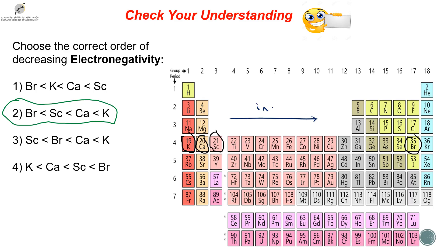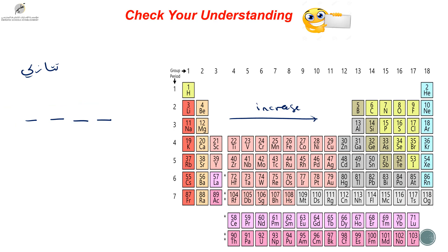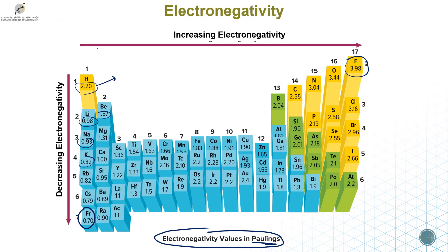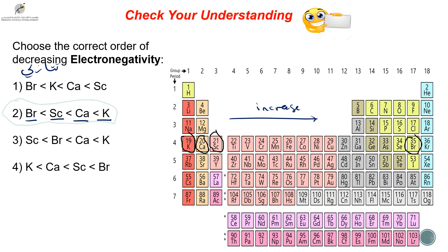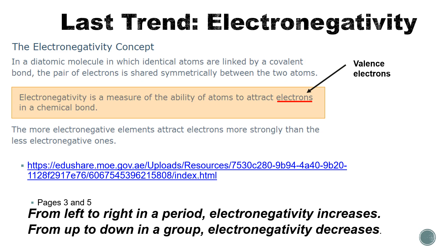The correct answer is number two. When you go from left to right, electronegativity increases, so this element is bigger, then scandium, then calcium, then potassium — ordered in decreasing order. We know this from the trend: from left to right electronegativity increases, from up to down it decreases. These are additional links in the PowerPoint with animation videos that can help you understand more about electronegativity.